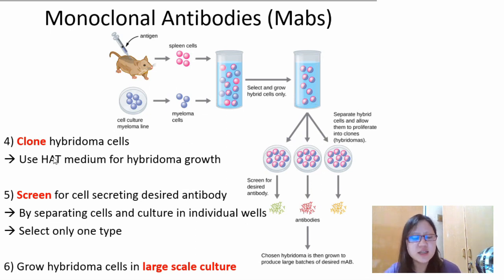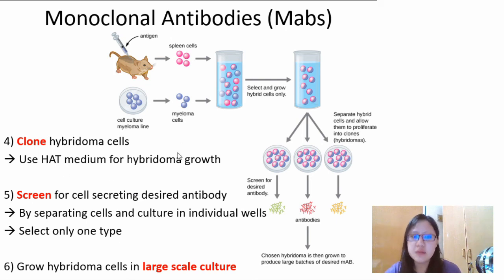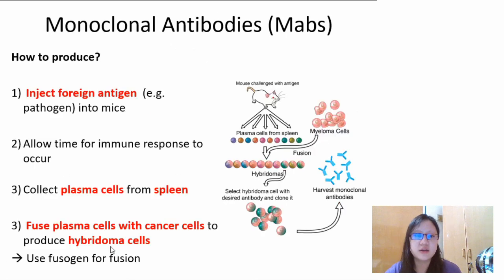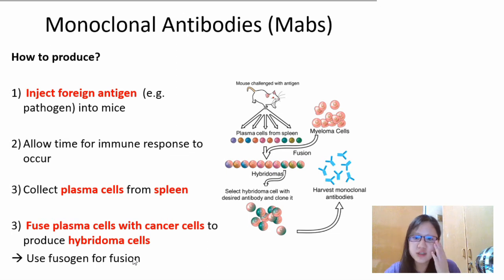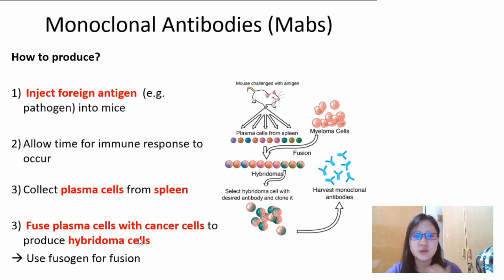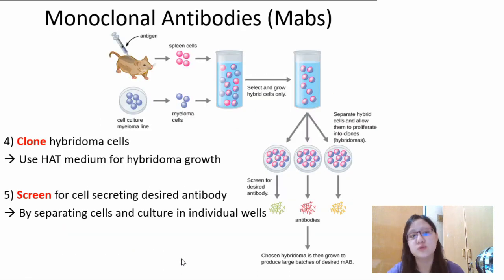You'll notice some words I didn't mention during the procedure: HAT medium, and fusogen for fusion. These are materials needed in the process, but they are usually additional valid points in the mark scheme. The more important things are highlighted in red, as usual.